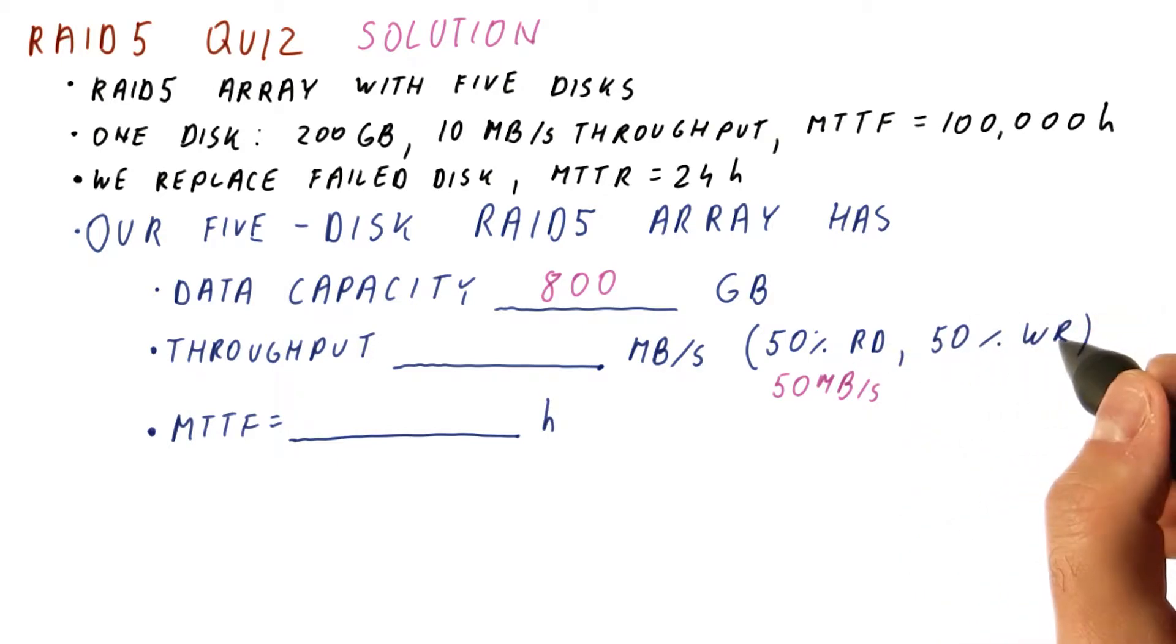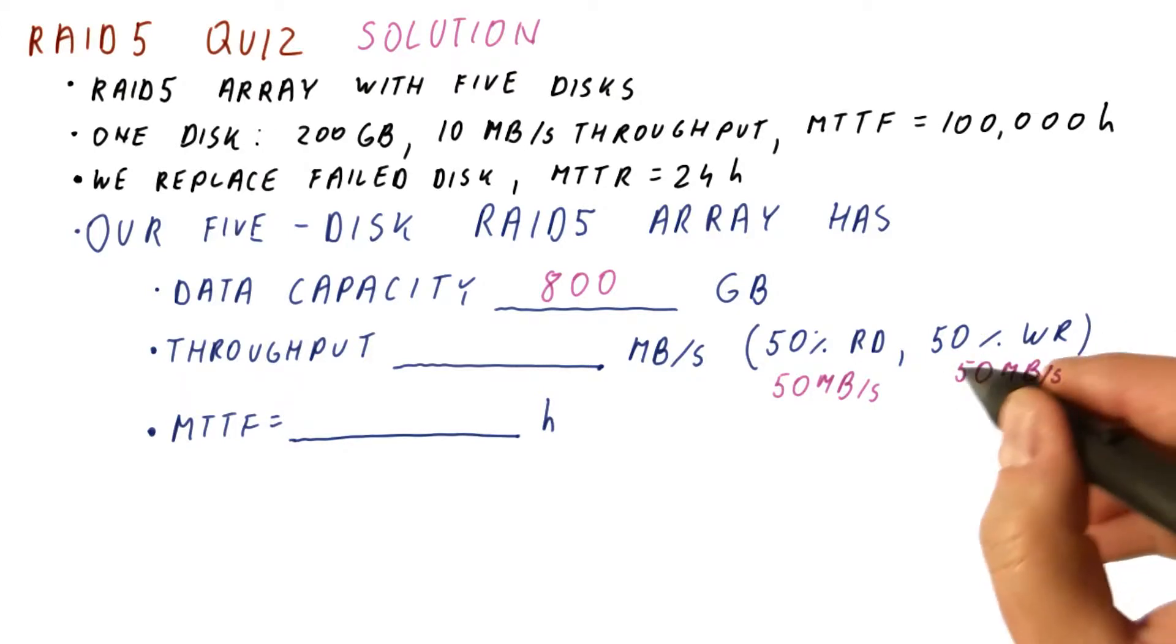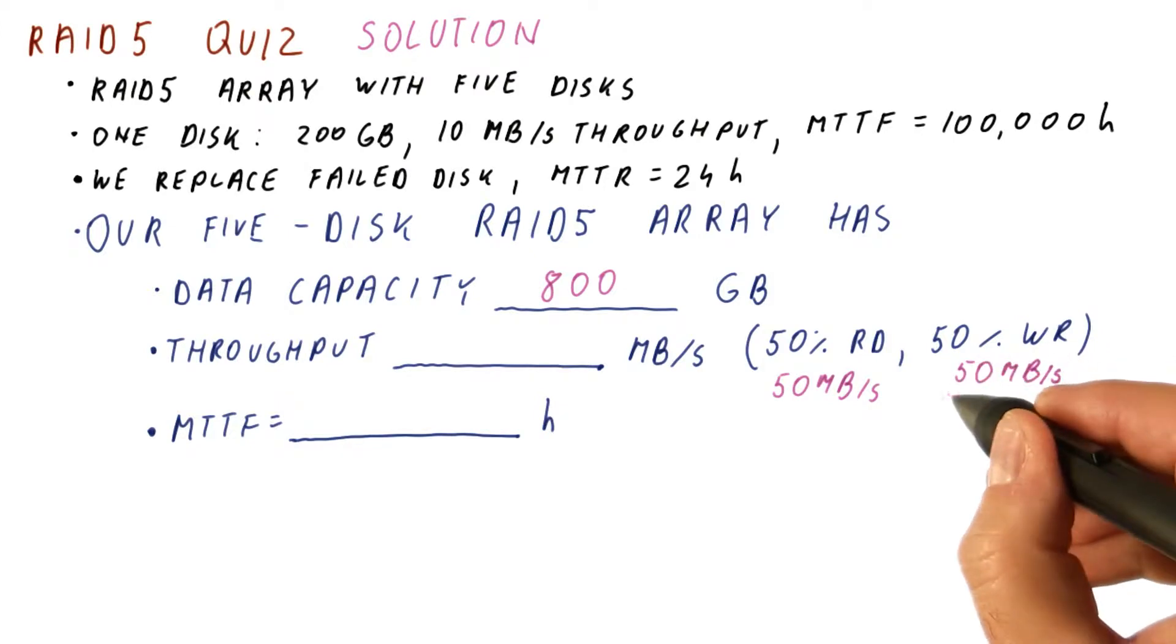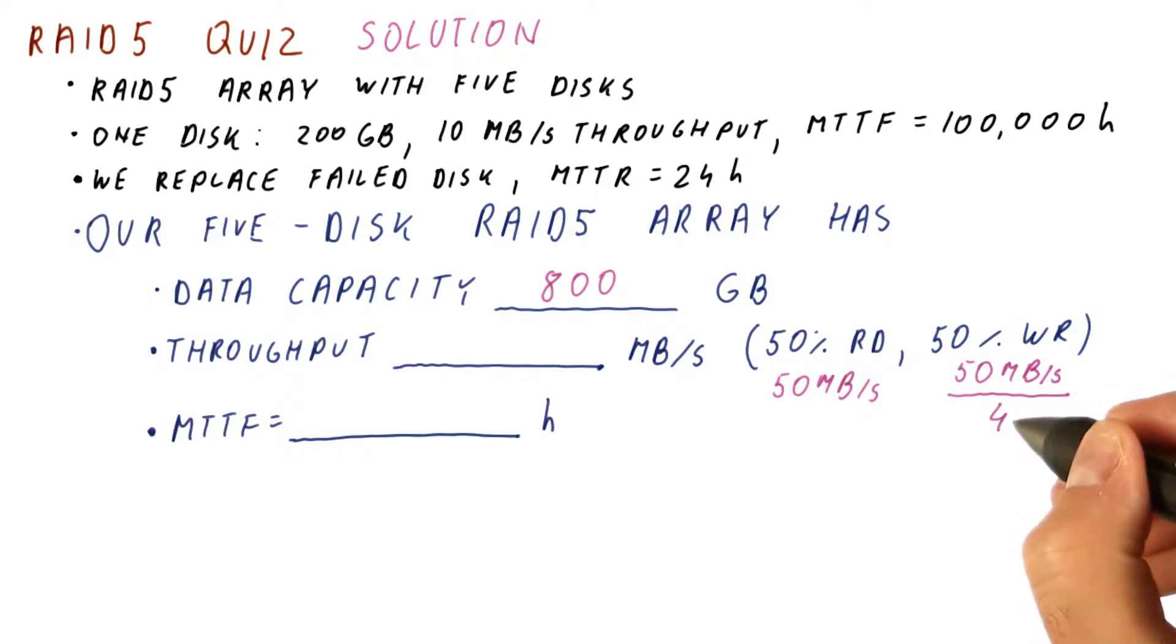For writes now, we distribute the parity accesses among all of the disks, so all of them can now support writes. But we need four accesses, so we could be doing what needs to be done for writes at 50 megabytes per second throughput. But what needs to be done for writes is four accesses. We need to read the data and the parity, and then update the data and the parity. So we do four accesses for every write, which means that our write throughput is going to be one-fourth of what we can do.